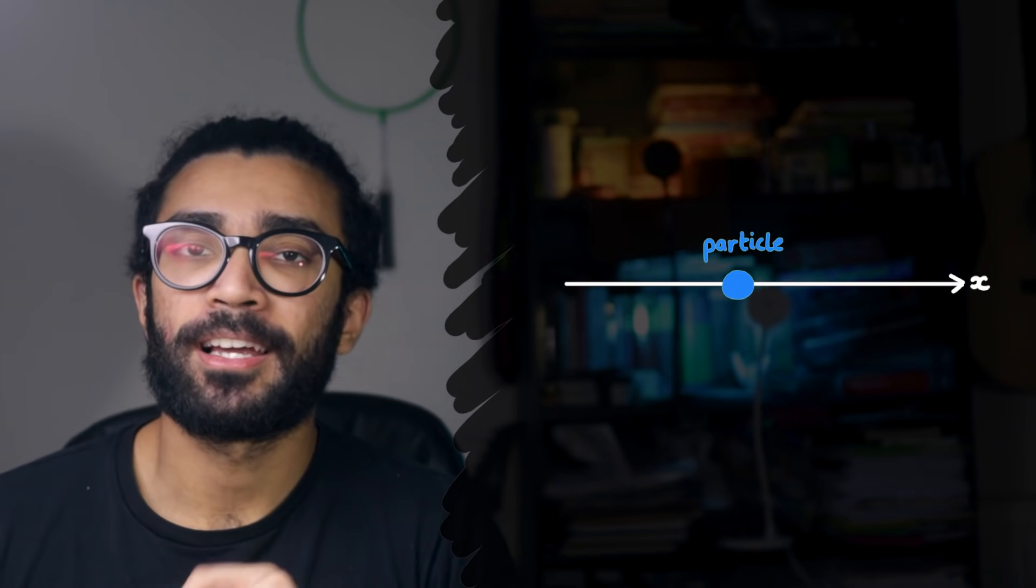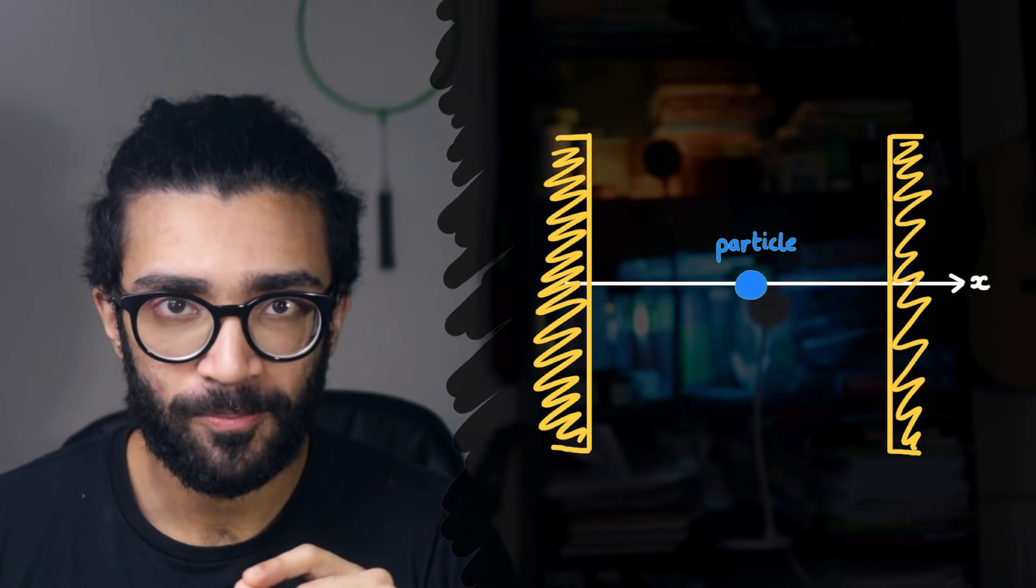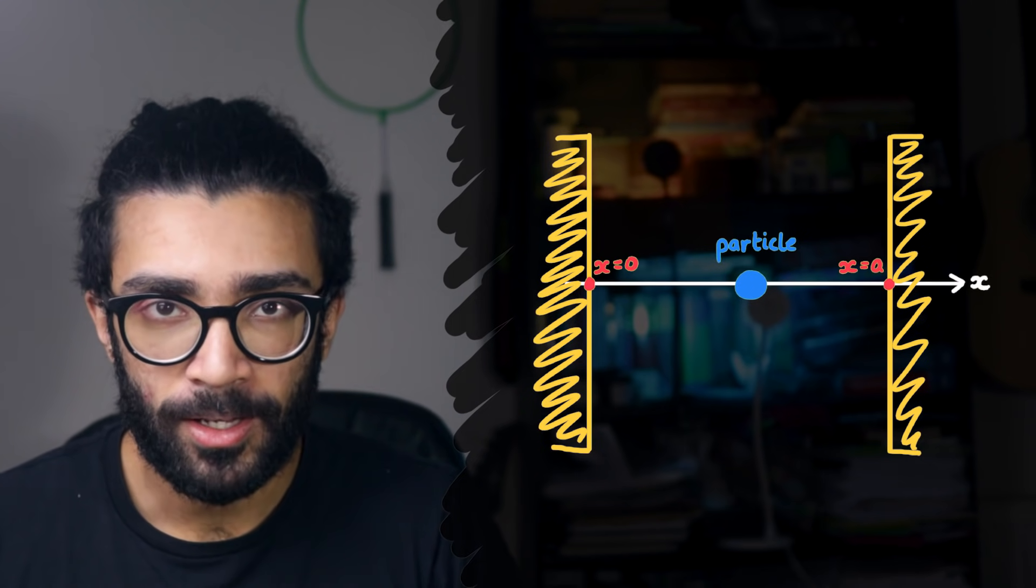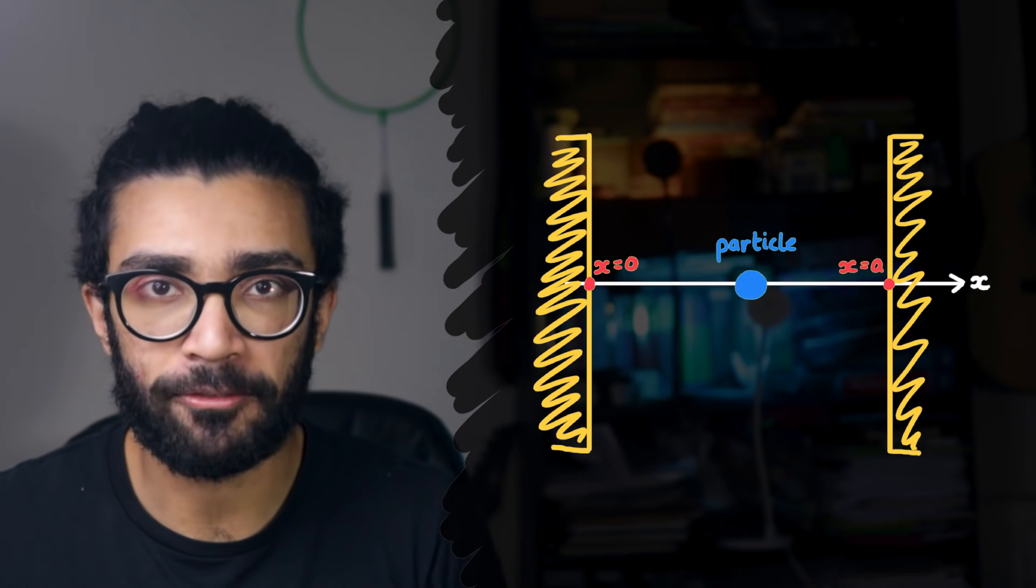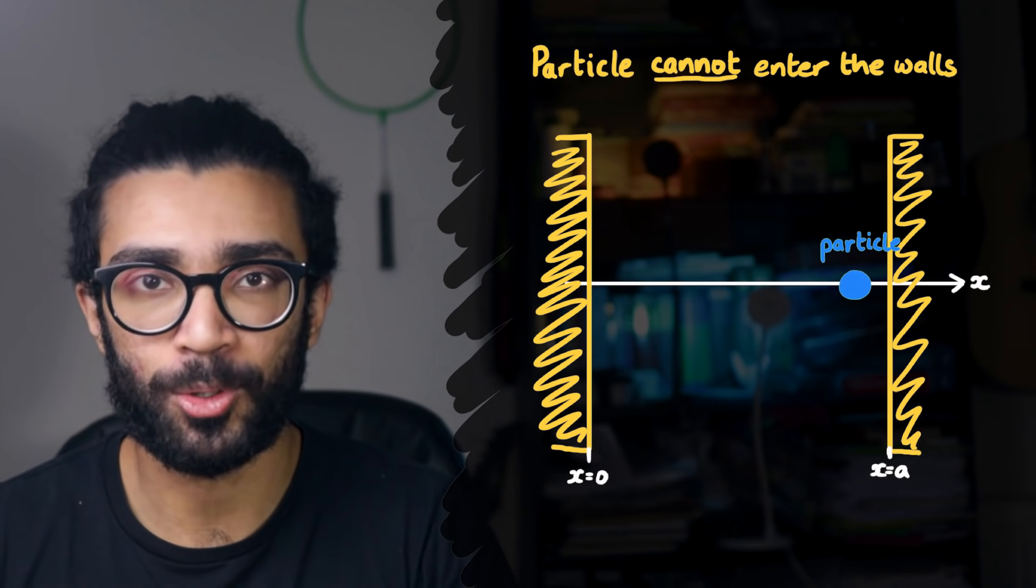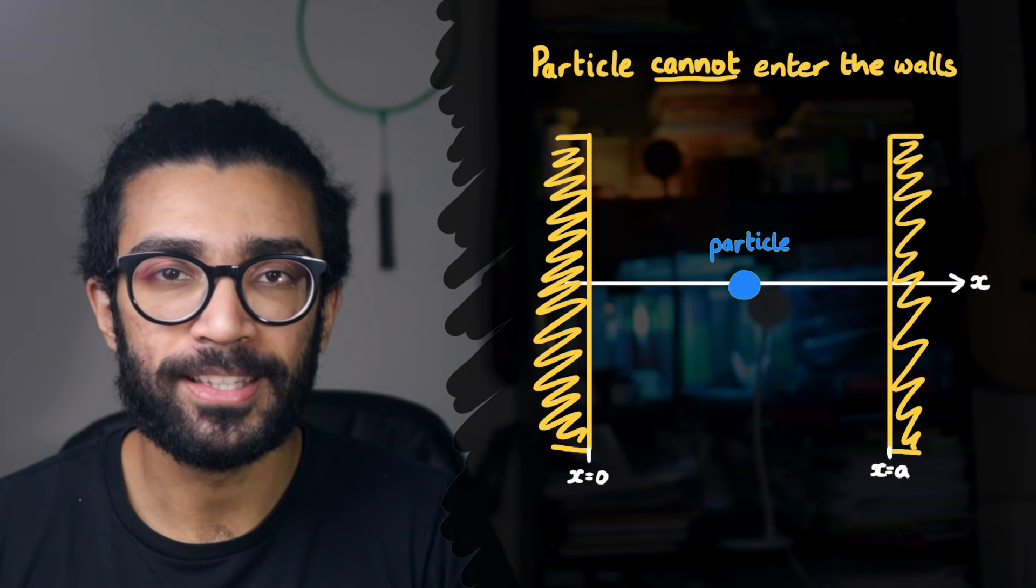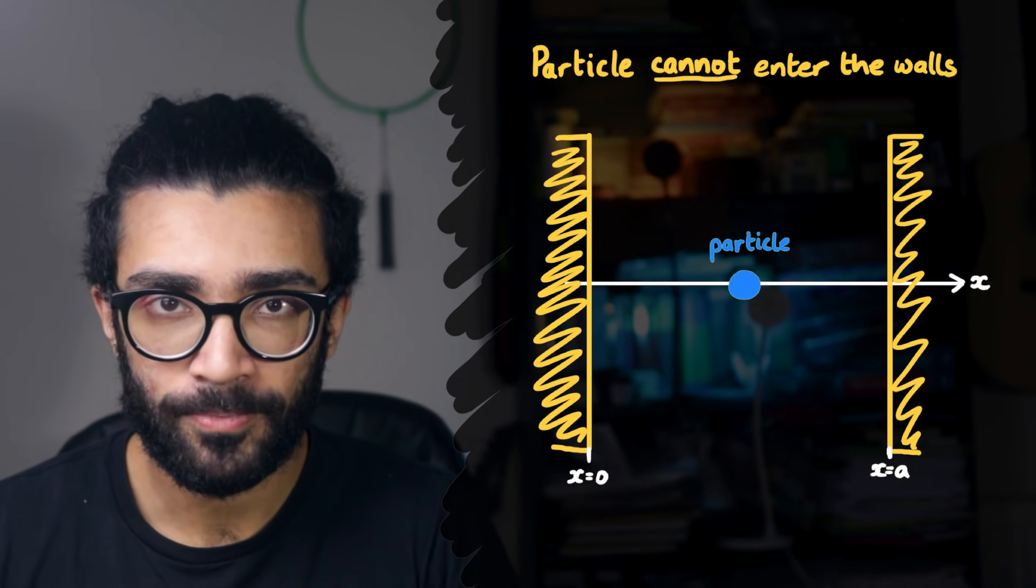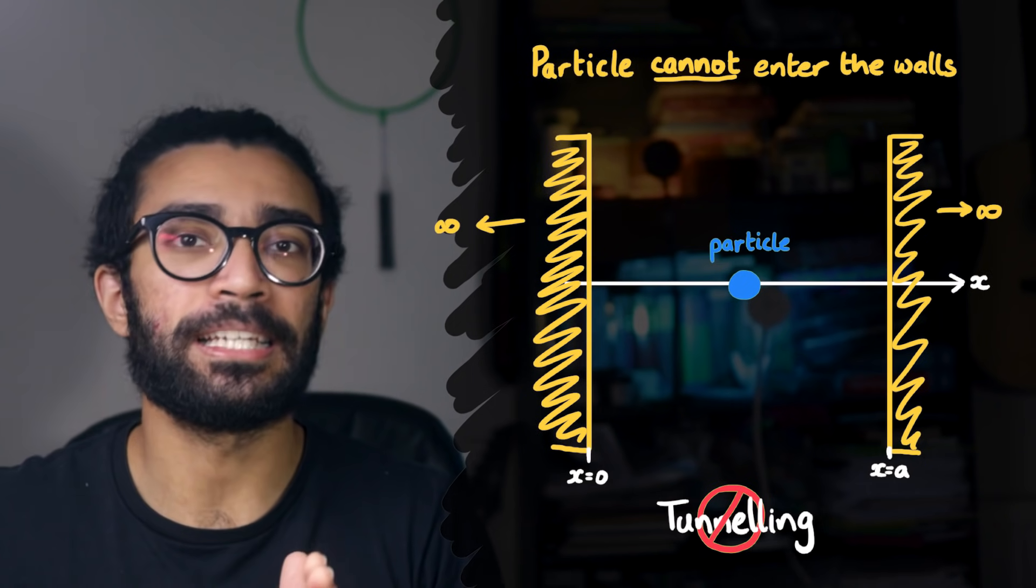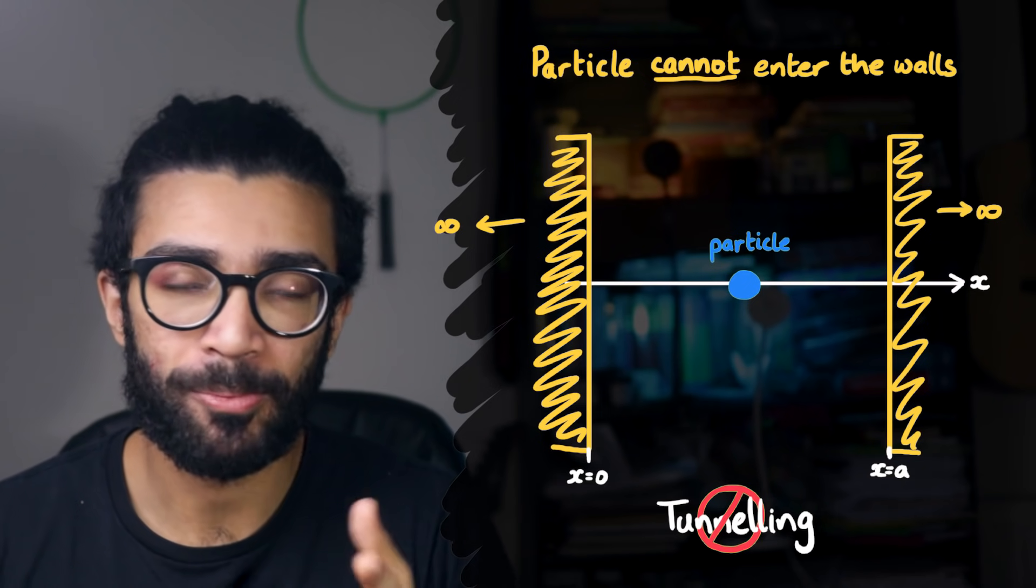Okay, so our particle is allowed to move left and right, but now we're going to place two barriers in its path. Specifically, we're going to place a barrier at x is equal to zero and x is equal to a. We're going to say that these are massive, heavy, unmovable walls. Impenetrable, even. The particle cannot get through these walls and cannot be found anywhere other than between the walls. For those of you familiar with the idea of quantum tunneling, yeah, we're saying this doesn't happen here. And the way to ensure that is that we say these walls are infinitely thick, they go on forever. Again, another non-physical assumption, but it will make the maths easier.